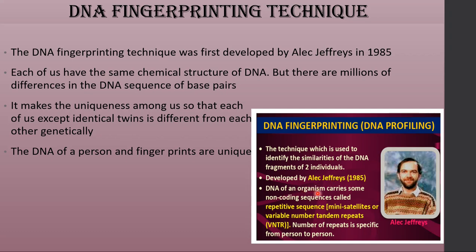The DNA of an organism carries some non-coding sequences, also called introns. Among these are some repetitive sequences called mini-satellites, or VNTR — variable number tandem repeats. The number of repeats is specific from person to person, and this is the basic principle behind the DNA fingerprinting technique.